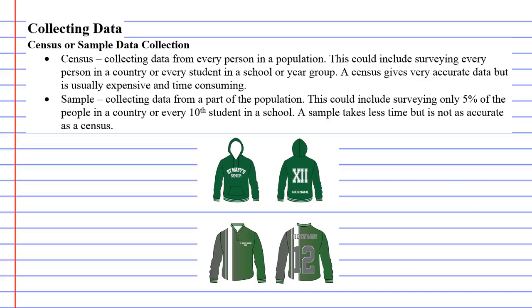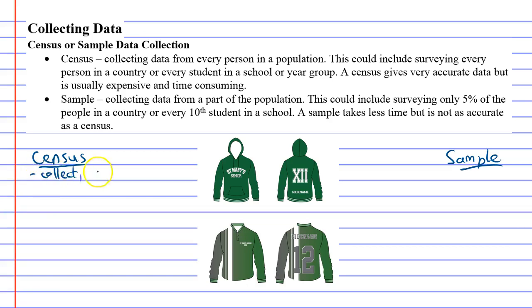Census or sample data collection. Now some of you might have heard about a census before. It's something we do in Australia every 10 years. It's called a census and it's very much related to what we are going to explain the census to be today. What happens in Australia is they collect data from every person in the country.